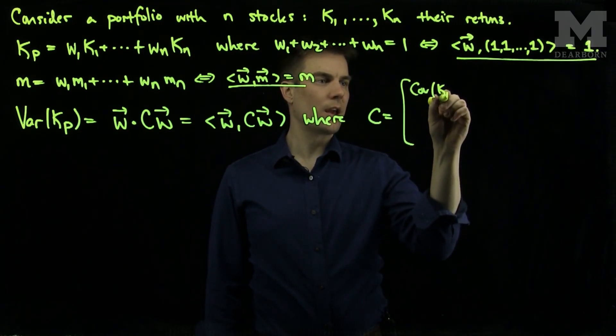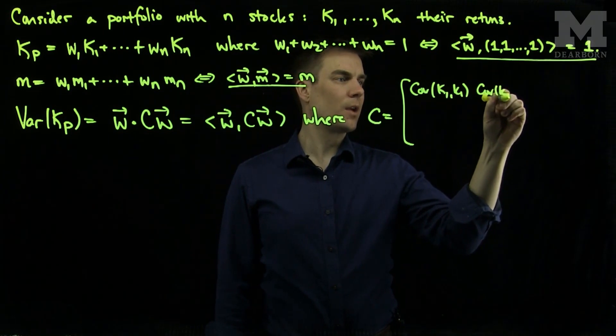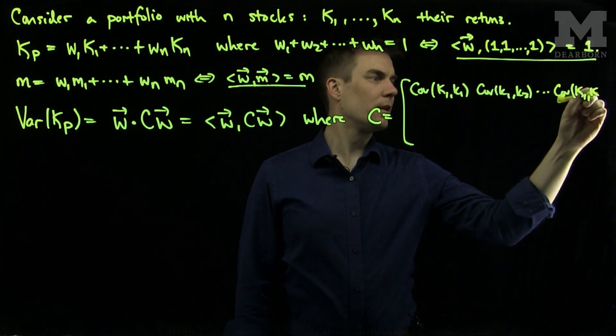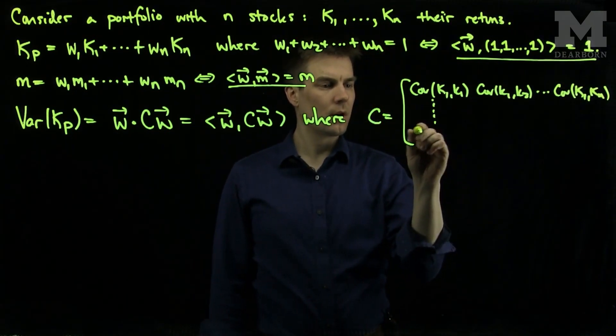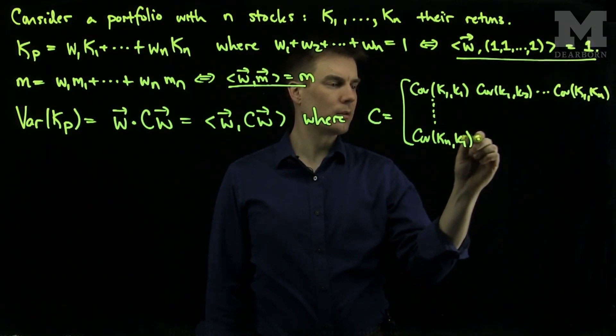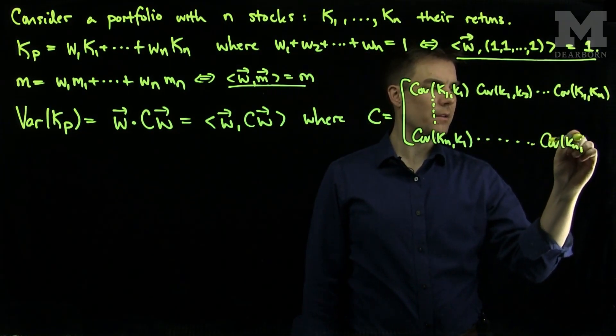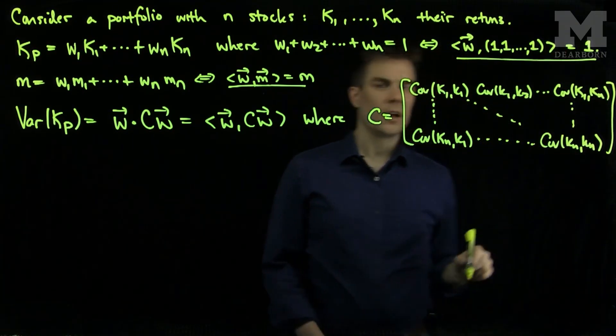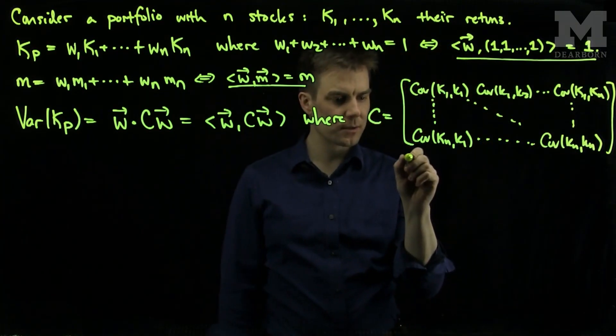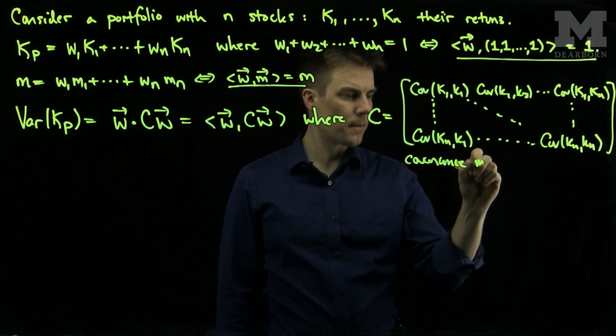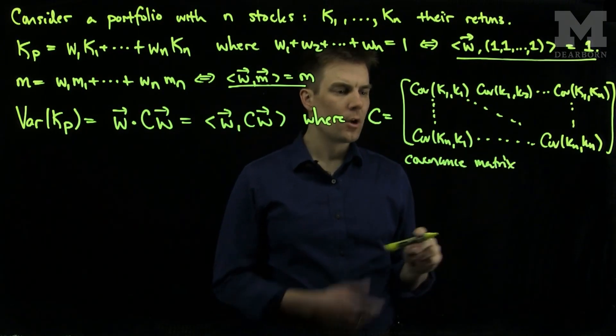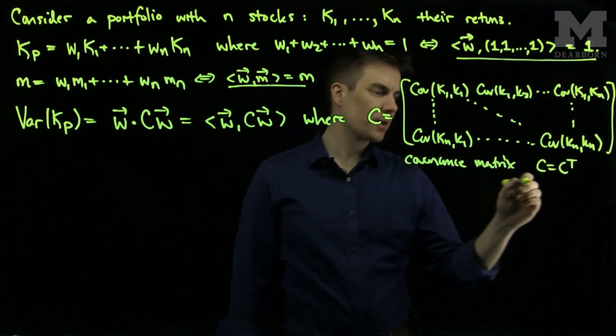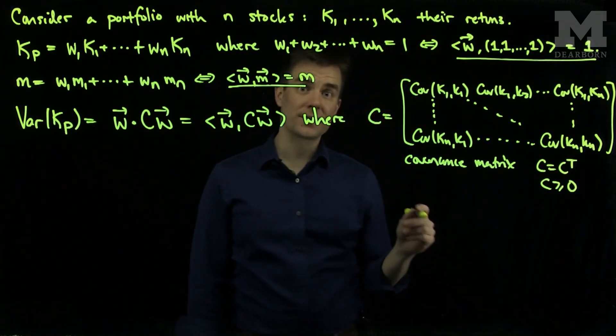So I will have covariance of K1, K1, covariance K1, K2, covariance of K1, Kn, covariance of Kn, K1, covariance of Kn, Kn. And this is my covariance matrix. We can note that the covariance matrix has the special property that C is equal to C transpose, it's symmetric, and also that C is positive definite since it arises as a variance.